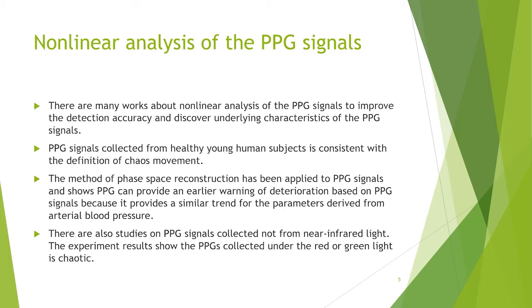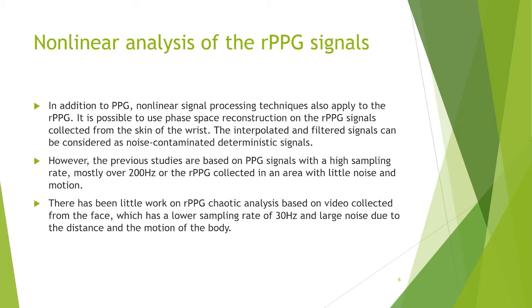PPG signals collected from healthy human subjects are consistent with the definition of chaotic movement. The method of phase-space reconstruction has been applied to PPG signals and shows PPG can provide an early indicator of deterioration based on PPG signals, because it provides a similar trend for parameters derived from arterial blood pressure. There are also studies on PPG signals collected not from near-infrared light; results show PPG collected under red or green light is also chaotic. It is also possible to use phase-space reconstruction on RPG signals collected from the skin of the wrist. The interpolated and filtered signals can be considered as noise-contaminated deterministic signals.